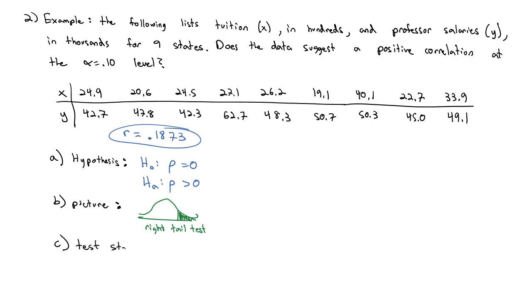Next step is to find the test statistic. For our test statistic, we know that is t equals r times the square root of n minus 2 over the square root of 1 minus r squared. So in our case, r is 0.1873 times the square root of 9 minus 2 because there's 9 states represented in this table divided by the square root of 1 minus r squared which is 0.1873 squared. And when I do that, I get a test statistic of 0.5045. That is my test statistic that's going to let me calculate my p-value.